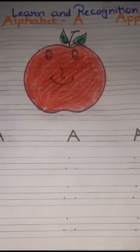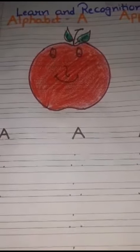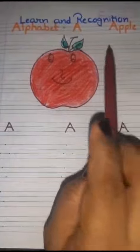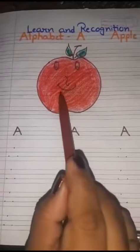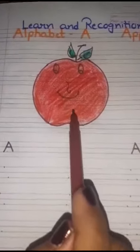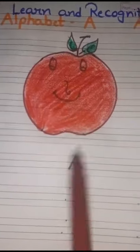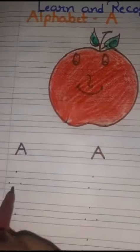Hello students, today we learn Enrico Ganesian alphabet A. A for Apple. Which color? Red. Let we start.